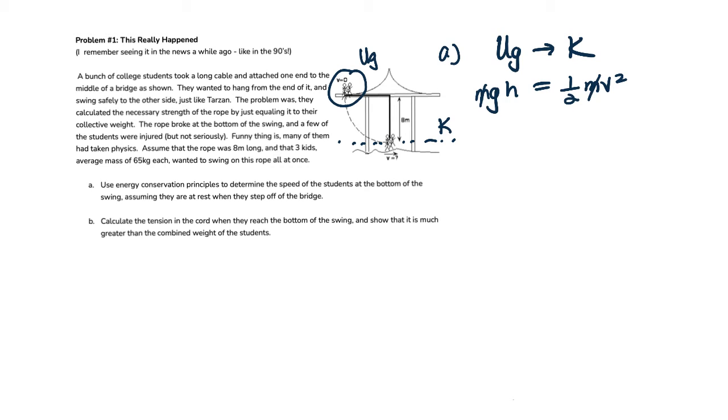We can get rid of the mass, and V is equal to the square root of 2GH, which if I were to calculate it, which I will right now, is 2 times 9.8 times the height, which is 8 meters. And then I'll take the square root and I get 12.5 meters per second, which is quite a clip.